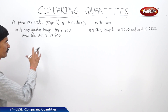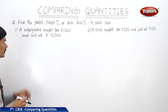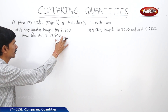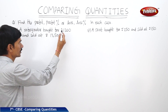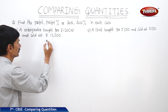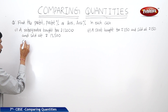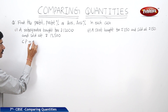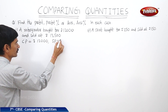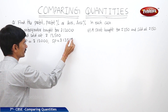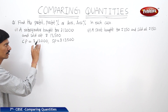Find the profit, profit percent, or loss, loss percent in each case. In the first case, a refrigerator bought for 12,000 rupees and sold for 13,500 rupees. The cost price is 12,000 rupees and the selling price is 13,500 rupees. There is profit here because the selling price is more than the cost price.